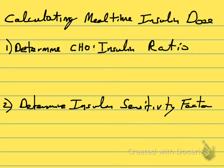The carbohydrate-to-insulin ratio is basically going to tell you how much carbohydrate in a meal is going to be covered by a single unit of insulin — so each unit of insulin will cover how many grams of carbohydrate, and this is for the meal that you're about to eat. The insulin sensitivity factor is going to tell you how much insulin you're going to need to bring down any pre-meal hyperglycemia that you currently have.